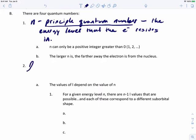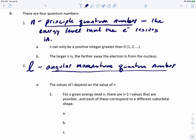So the next one is L, which I'm going to write as a cursive L, so that way it doesn't look like a one or an i. So L is called the angular momentum quantum number. What this tells us is the shape of the atomic orbital.